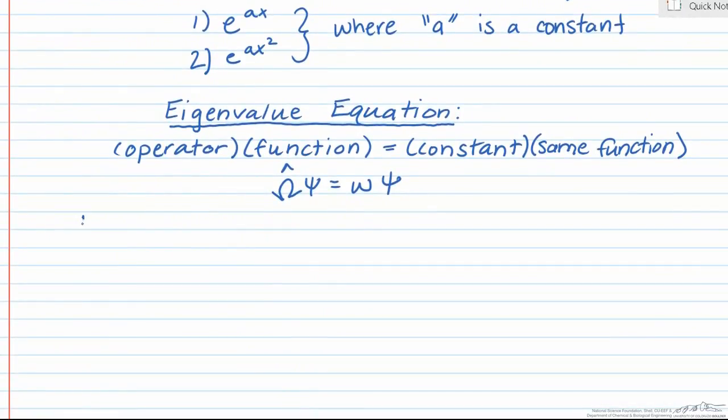So let's take a look at our first example, which is the function psi equals e raised to the ax. The derivative of psi with respect to x would be a times e raised to the ax, which is equal to a times our original function psi.